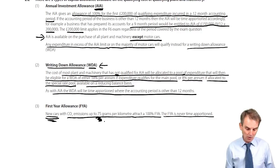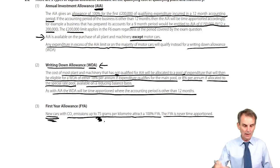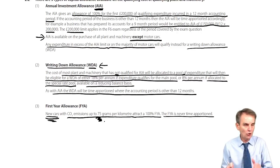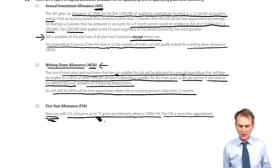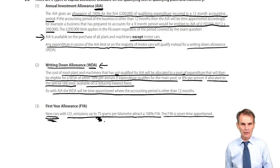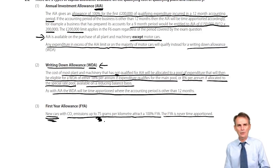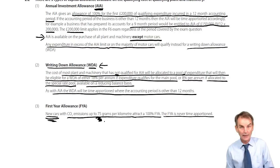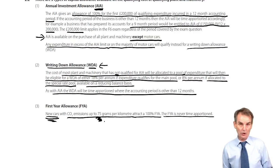Before we take this further, take a moment to look back at what we've covered regarding AIA, WDA, and FYA. Also be aware, as we will structure in a moment, the capital allowances computation follows a specific order: we go for AIA first, followed by WDA, followed if necessary by first year allowance. Take a moment to check through that, and then we'll continue with the illustration that awaits us over the page.